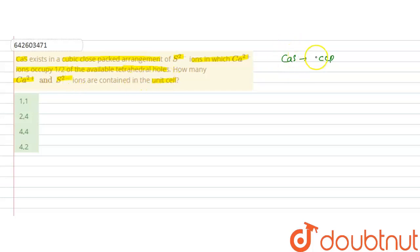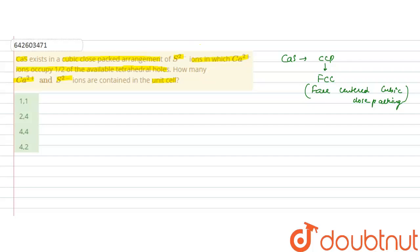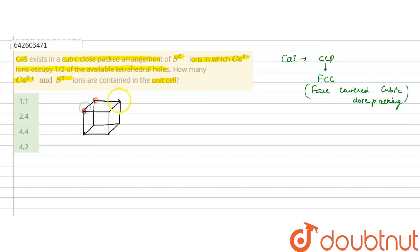Calcium sulfide exists in a cubic close-packed arrangement, which is the FCC arrangement — face-centered cubic close-packing — in which atoms are present at the corners of the unit cell as well as at the face centers. In the FCC arrangement, there are eight corners, so eight atoms are present at the corners, and at each face of the cube — since there are six faces — six face-center atoms are present.